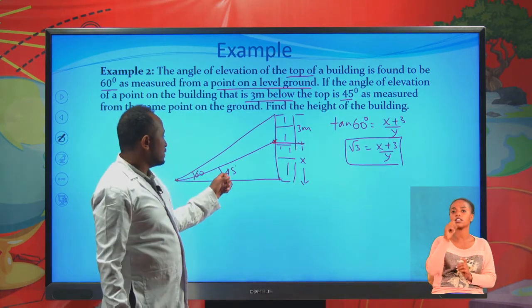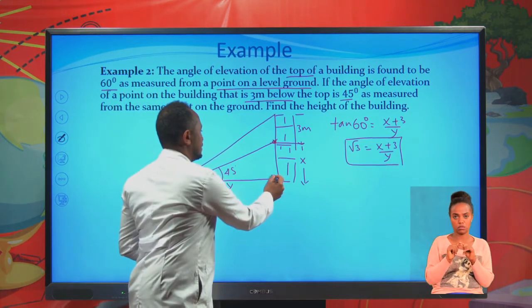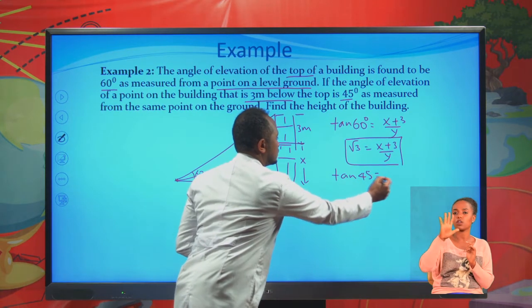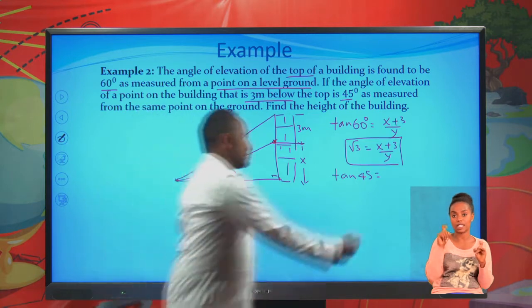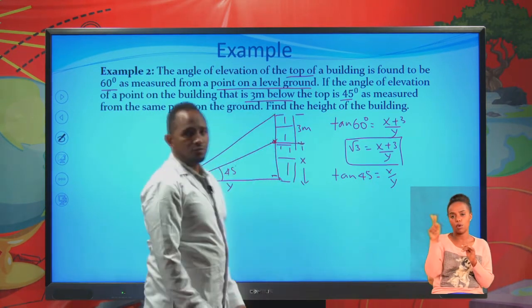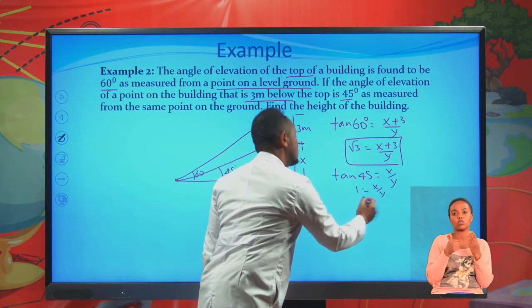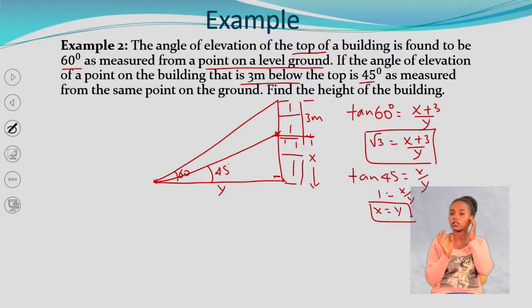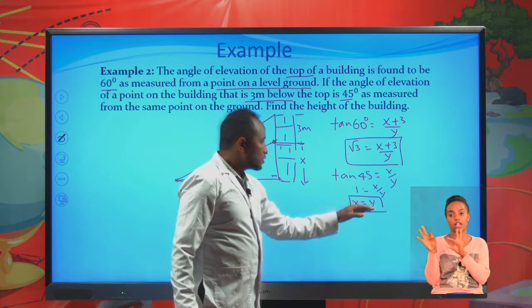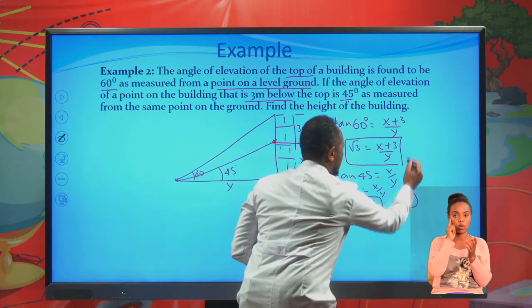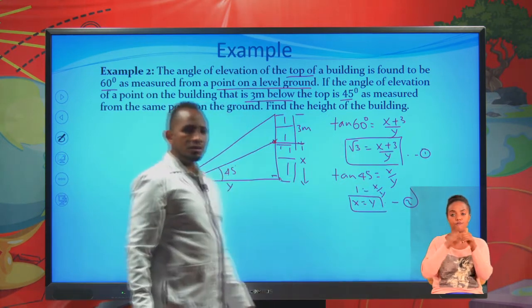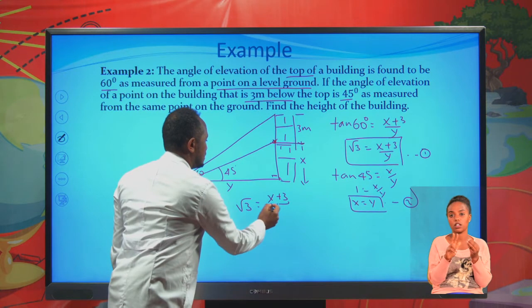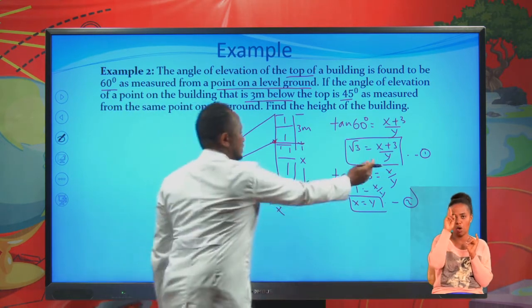Using the smaller right-angle triangle, tan 45 degrees equals x over y. Since tan 45 equals 1, we get 1 equals x over y, which means x equals y. This is our second equation. Since x and y are equal, we substitute y with x in the first equation to get the square root of 3 equals x plus 3 divided by x.